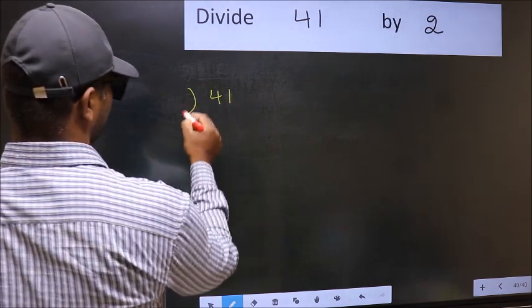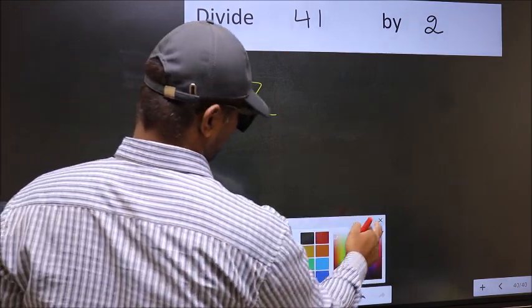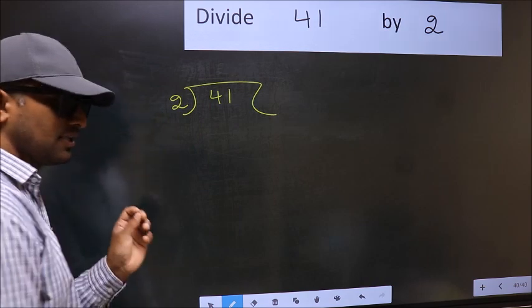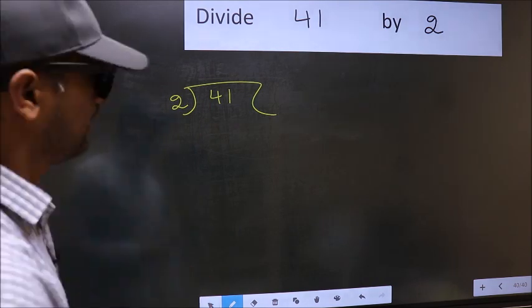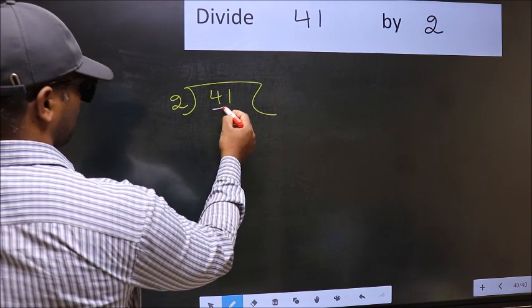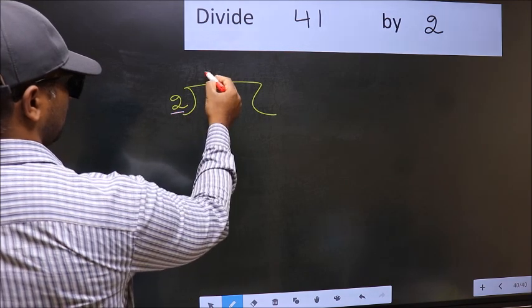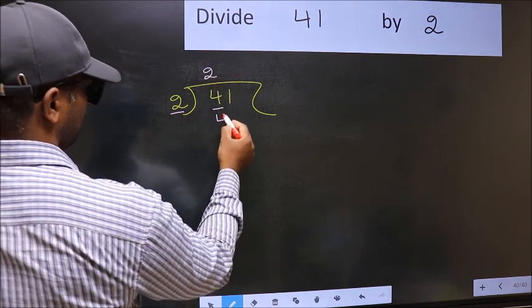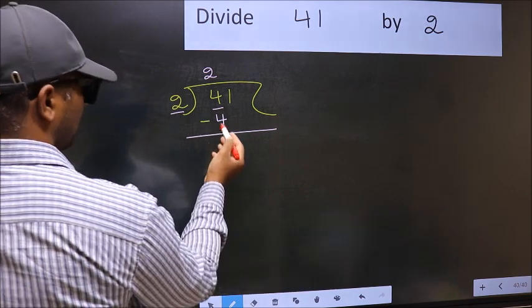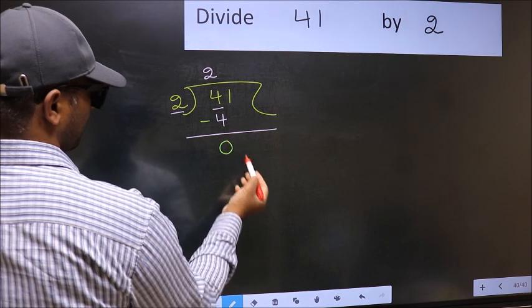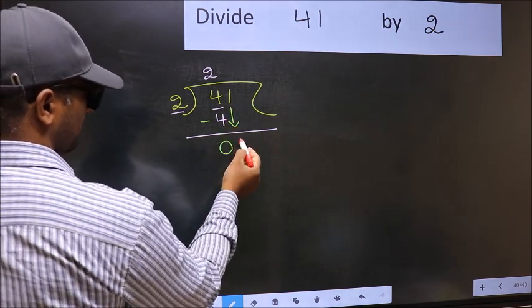41, 2 here. This is your step 1. Next. Here we have 4. Here 2. When do we get 4 in 2 table? 2 2s, 4. Now you should subtract. 4 minus 4, 0. Now you should bring down the beside number. So 1 down.